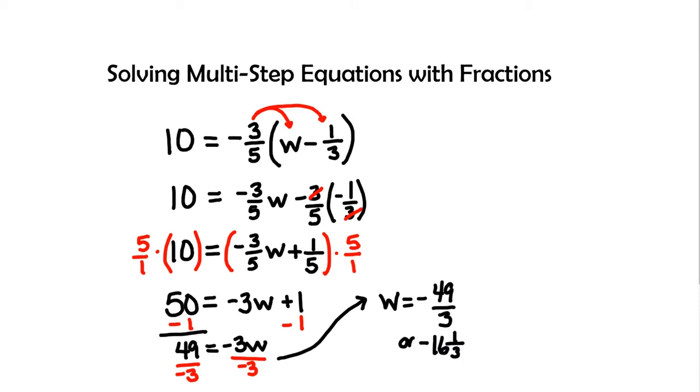Now let's go through and check our work because we're dealing with a lot of fractions. So let's go ahead and check. Let's rewrite our equation once again. 10 equals a negative three fifths times the quantity of.